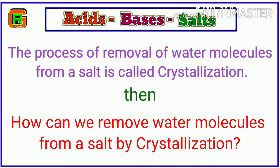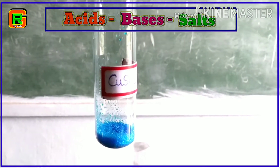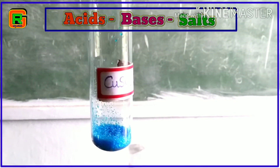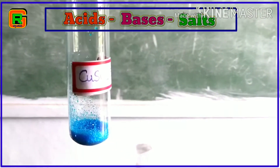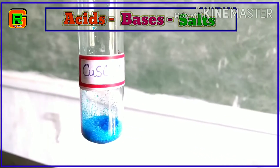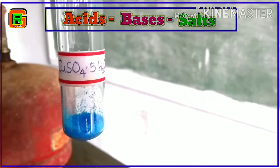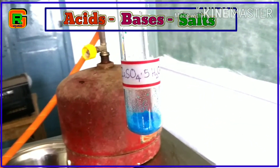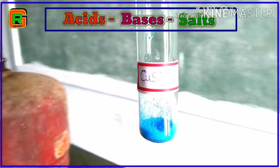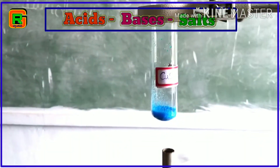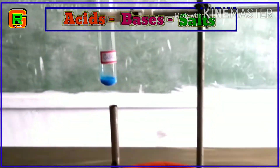Let us conduct an experiment to show the removing of water of crystallization from copper sulphate. Let us take a few crystals of copper sulphate in a dry test tube and observe them. What is the color of these crystals? Yes, these are blue in color.